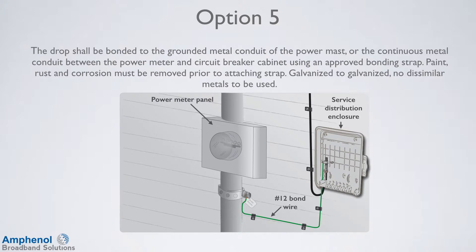With option number 5, the drop is bonded to the grounded metal conduit of the power mast, or the continuous metal conduit between the power meter and the circuit breaker cabinet, using an approved bonding strap. If attaching to the conduit on the home side of the meter panel, make sure the conduit is metal and is continuous to the circuit panel box. Use the proper clamp manufactured for copper contact on one side and galvanized pipe on the other. Make sure the contact point is clean of corrosion and paint prior to attaching the strap. The power mast cannot be used as a drop attachment to gain height over driveways, sidewalks, or streets. It's also good practice to add a do-not-remove tag. Always follow your company's installation practices.